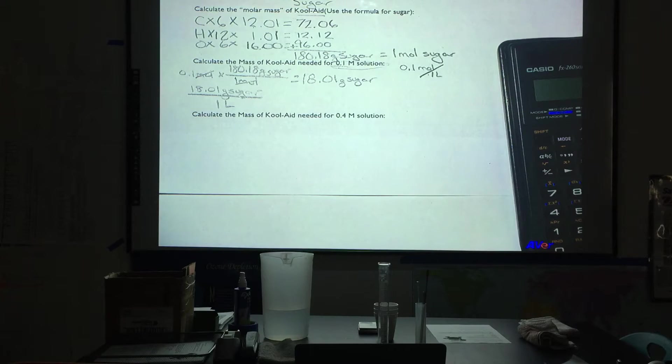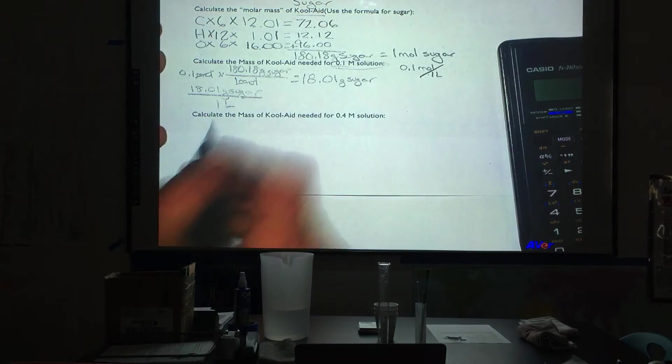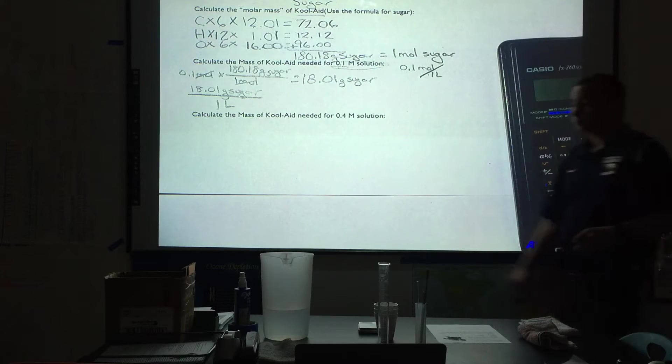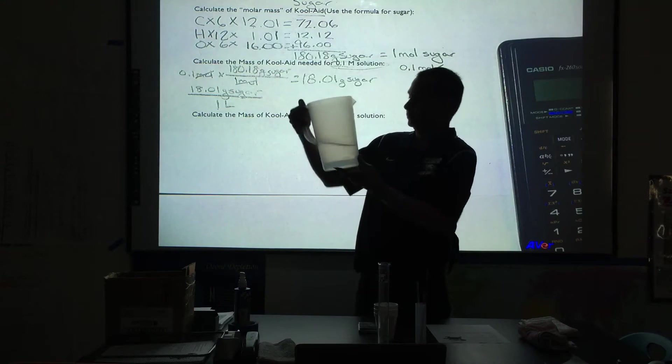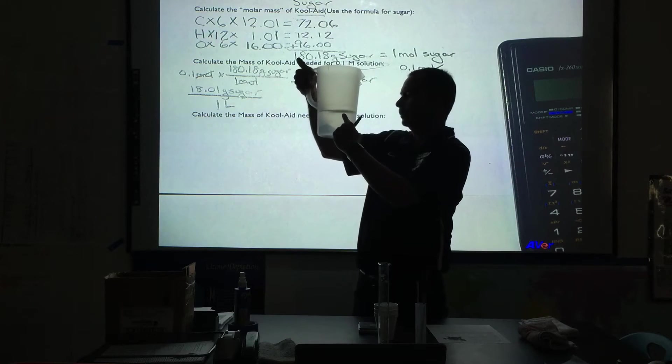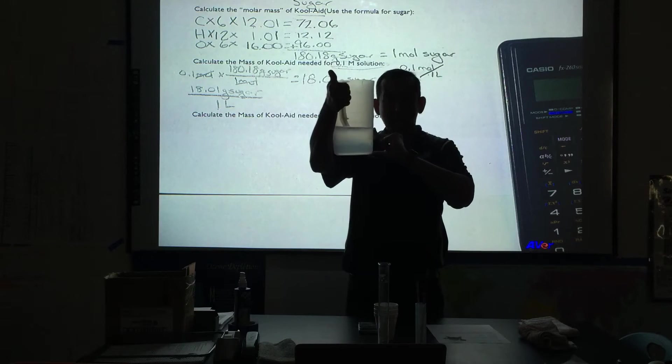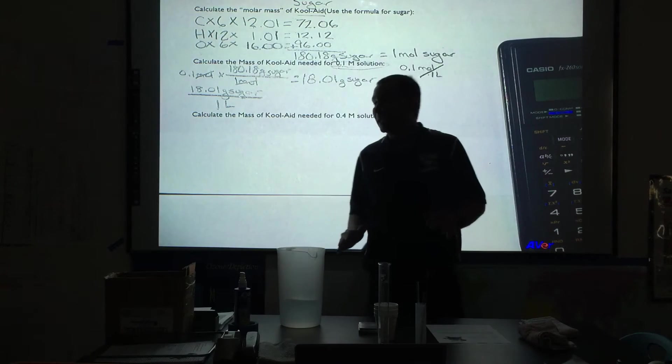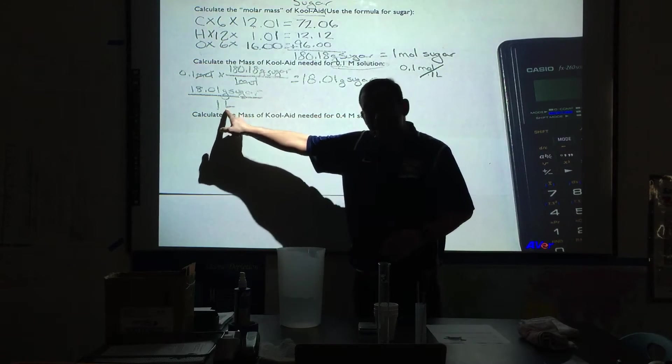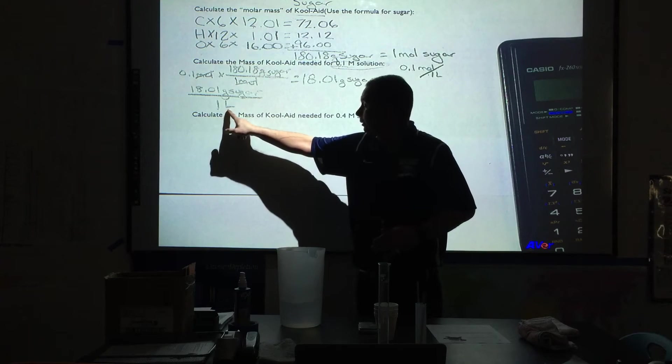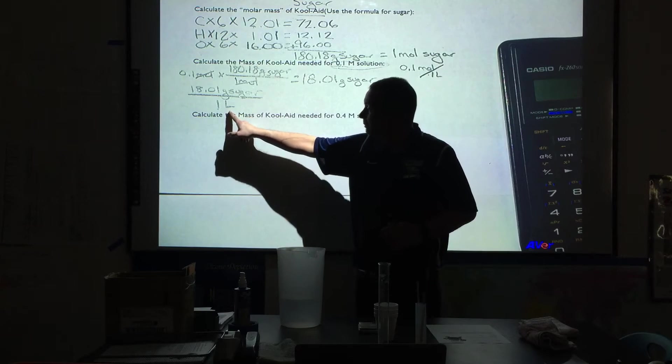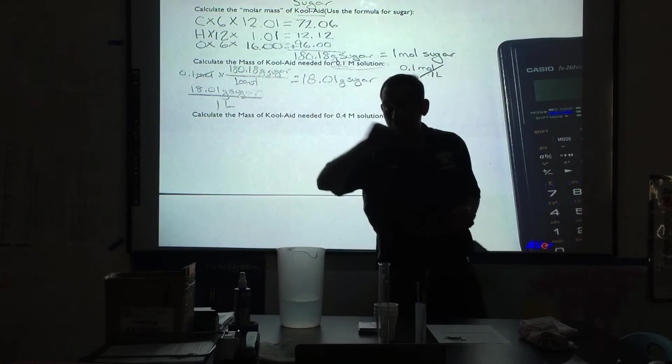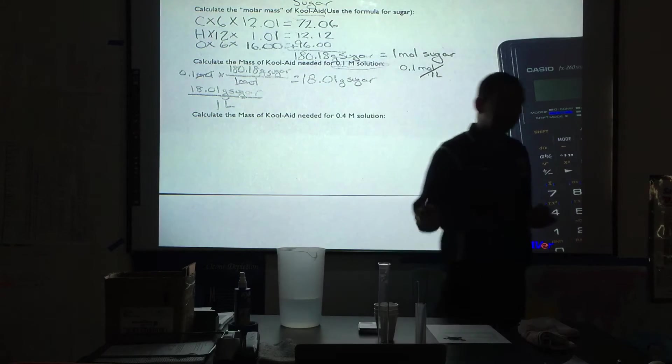Now the problem is we don't want to create 1 liter of a solution. That would be a large amount. Now this pitcher is full to the 1 liter point. That is too much for our lab. We do not want to make that much. If we made that much we would have a lot of waste. We are trying to avoid waste. So we are going to figure out for that 0.1 liters how much sugar, how much Kool-Aid we would put in. And the way we are going to do that is with cross multiplication.